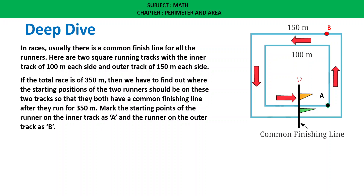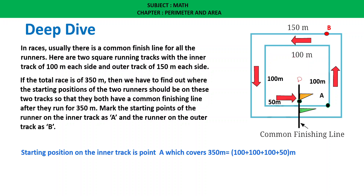Let us see point A on the inner track. The runner should reach the destination point covering 350 meters. Going this way: 100 meters forward, then 100 meters left, then 100 meters down, then 50 meters. So the total distance from starting point A on the inner track covers 100 plus 100 plus 100 plus 50 equals 350 meters.